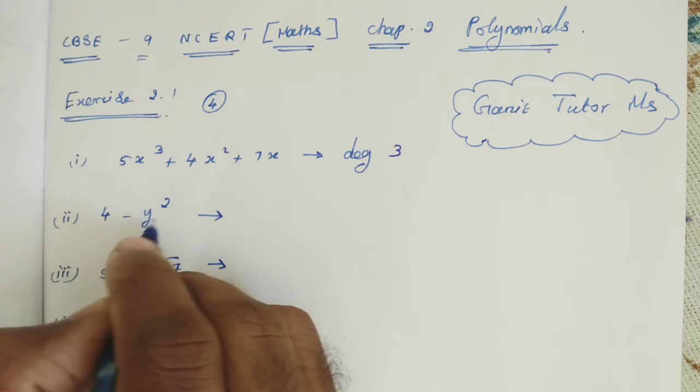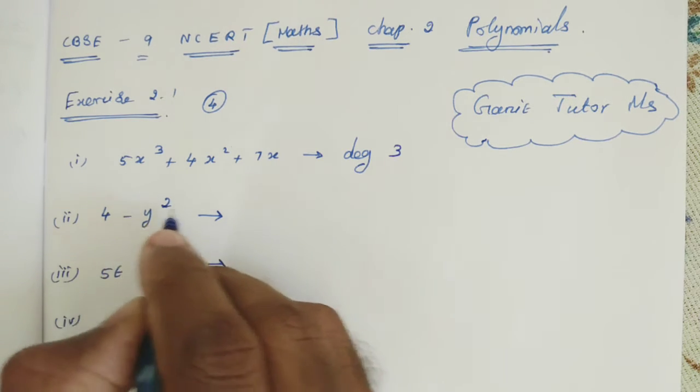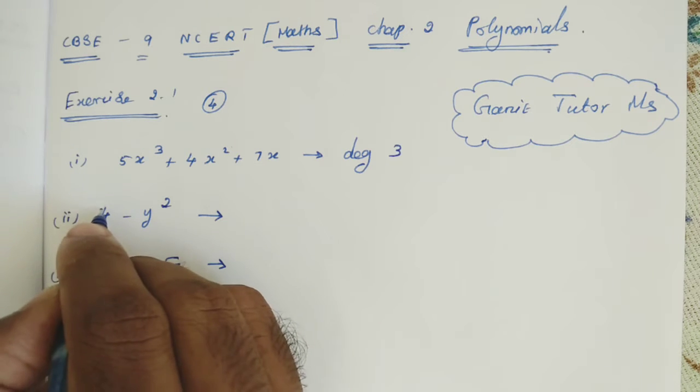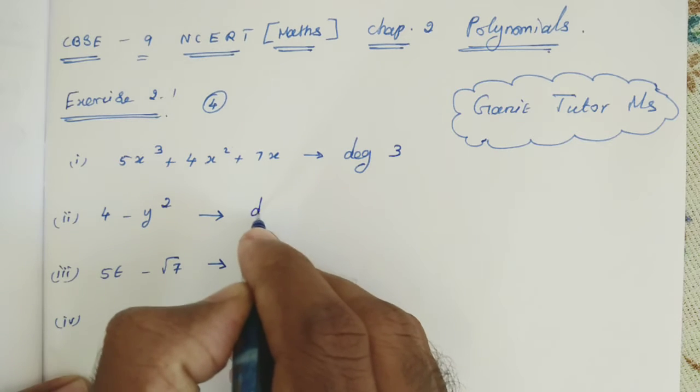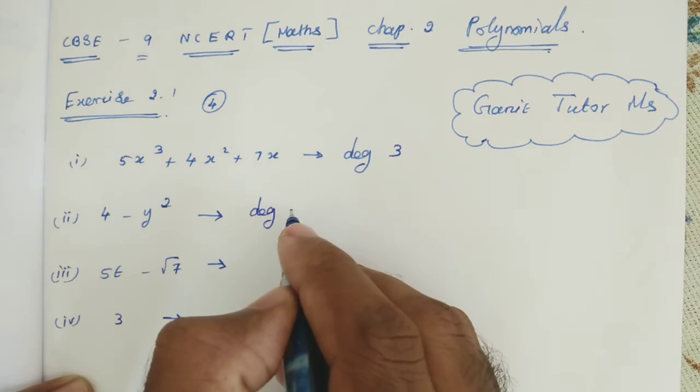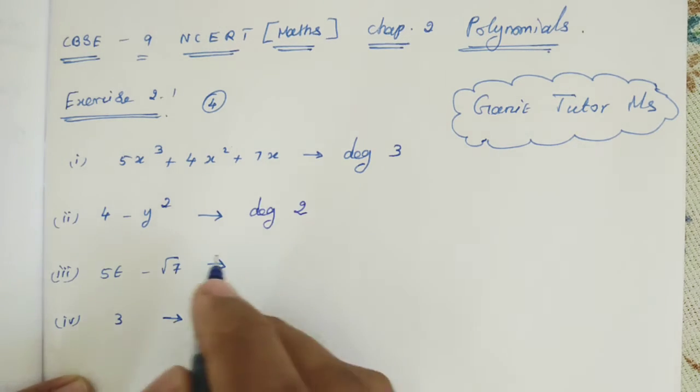Next: 4 minus y². Now here, the degree - here y power 0, so 0. Here 2. So highest power is the degree. So degree 2.